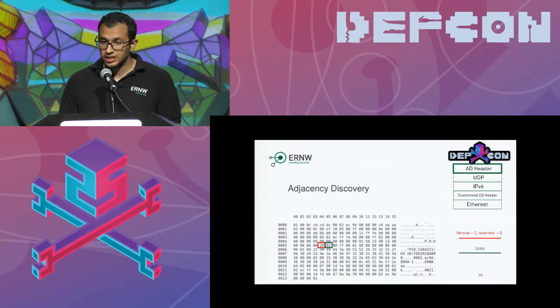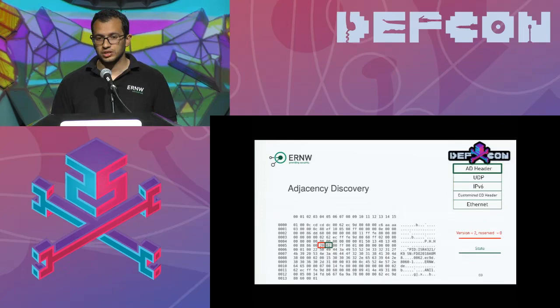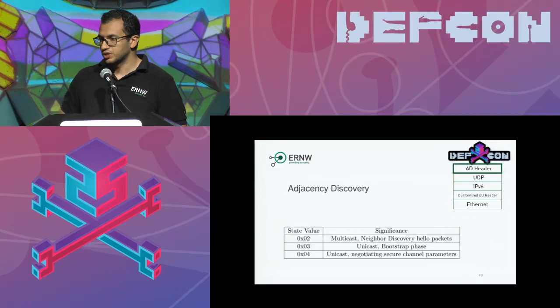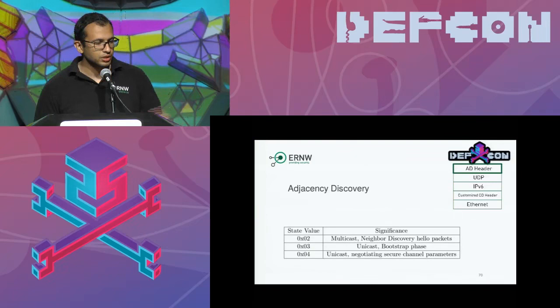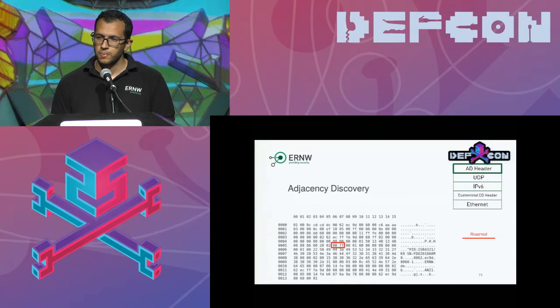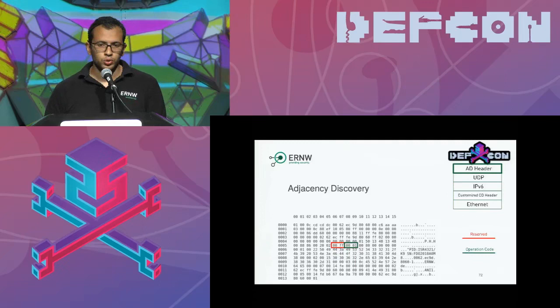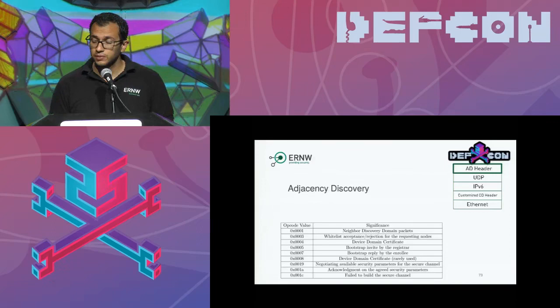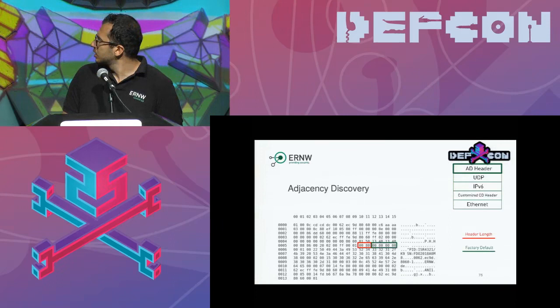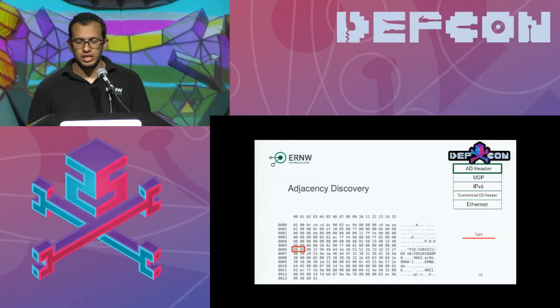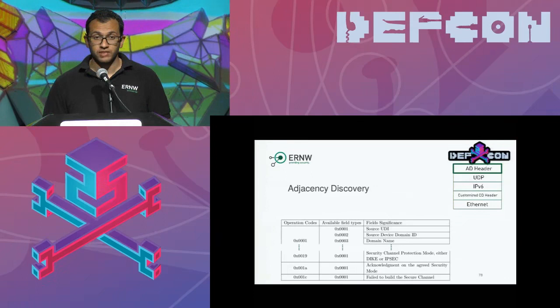The state is 0x02, meaning we're in the certificate-getting phase. For adjacency discovery, there are three states: checking the whitelist for acceptance, and building a secure channel. After reserved bytes come the opcodes indicating the significance of each packet. The available opcodes list is larger here. Then header length, factory default reserved bytes, and type-length-value fields — the same concept. The available TLV types are quite extensive.